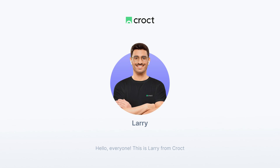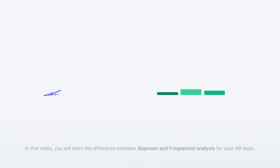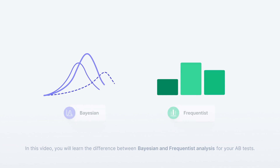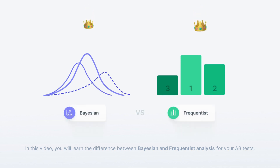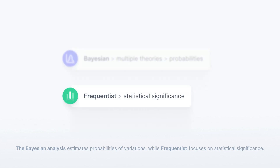Hello everyone, this is Larry from Kroct. In this video, you will learn the difference between Bayesian and Frequentist analysis for your A/B tests. The Bayesian analysis estimates probabilities of variations, while Frequentist focuses on statistical significance.